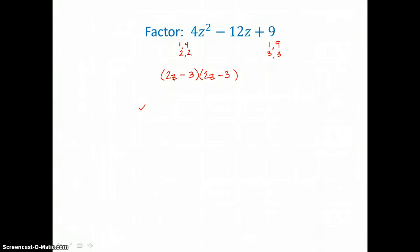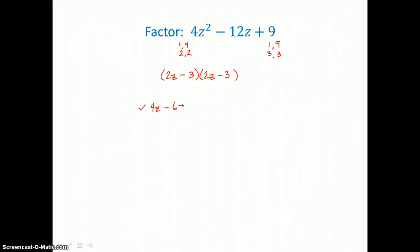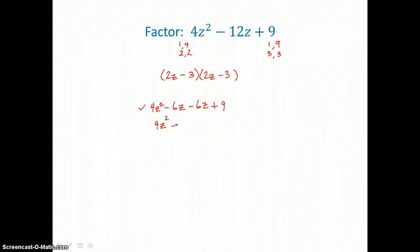I'll check by distributing. 2Z times 2Z is 4Z squared. 2Z times negative 3 is negative 6Z. And negative 3 times 2Z is another negative 6Z. And negative 3 times negative 3 is positive 9. So adding the like terms in the middle, I get 4Z squared minus 12Z plus 9.